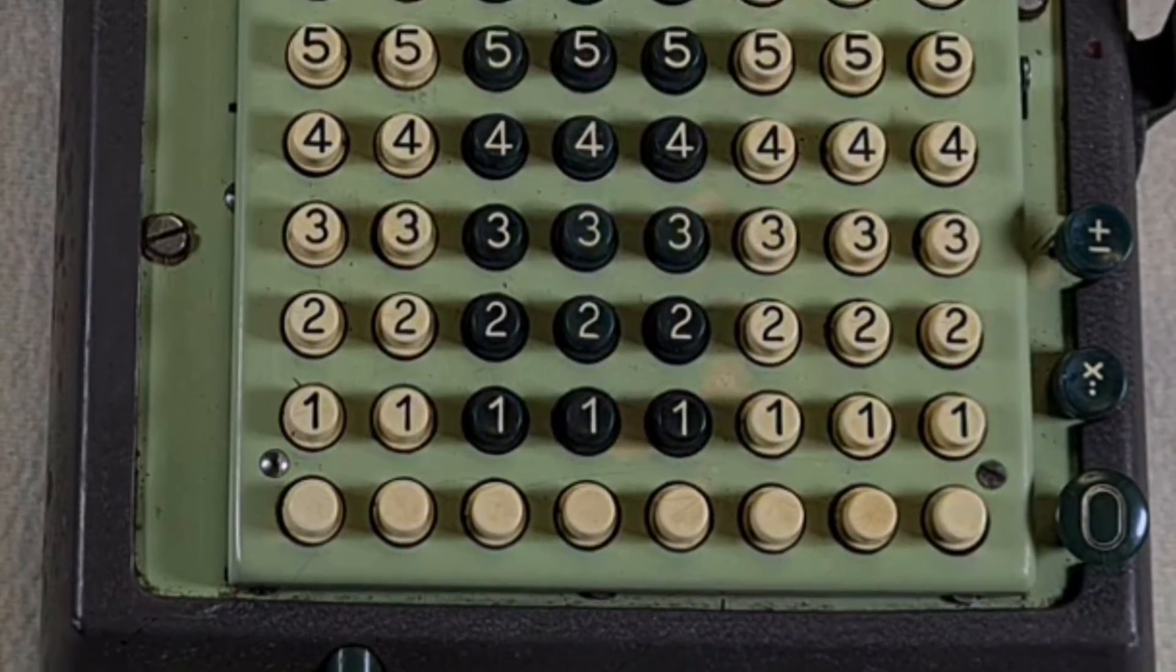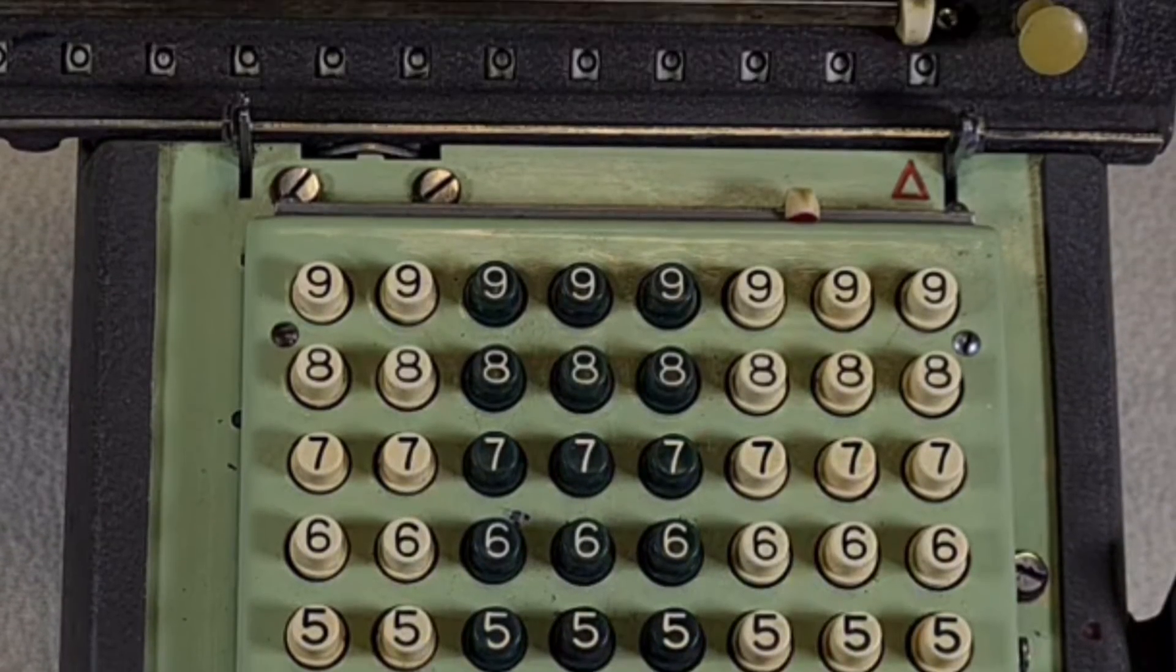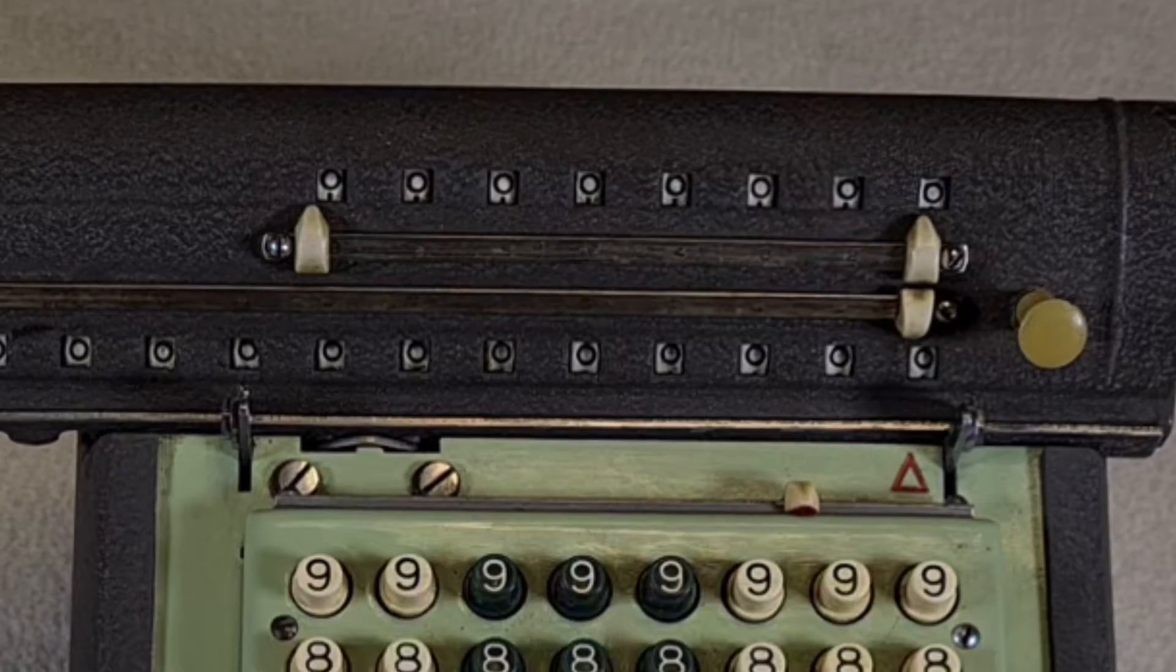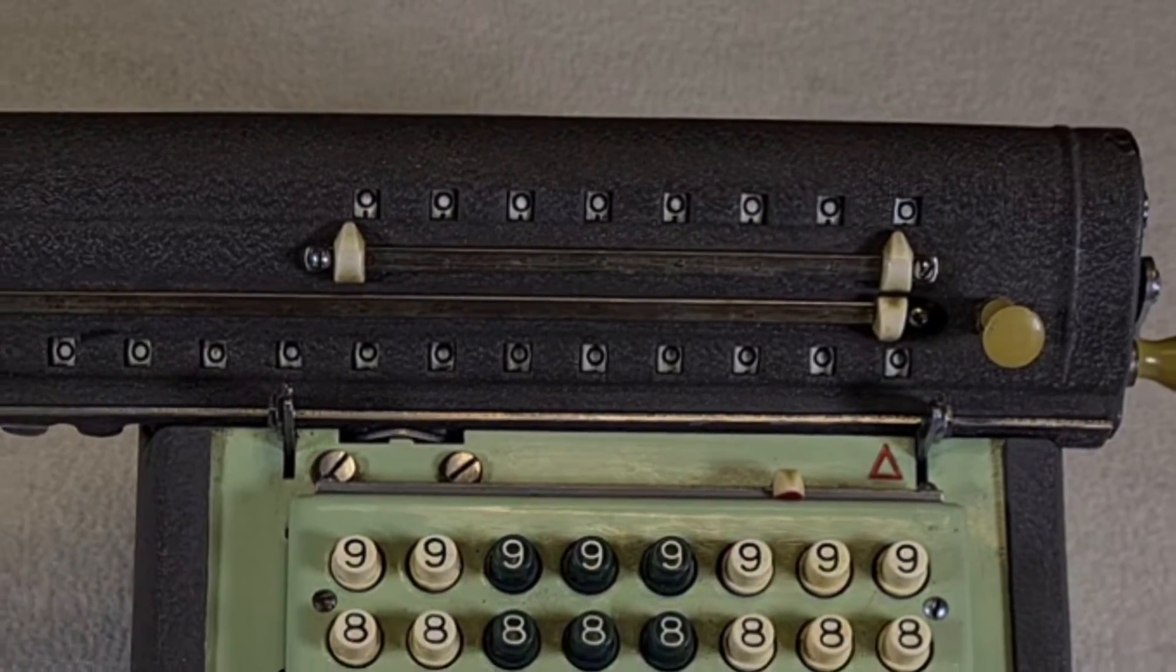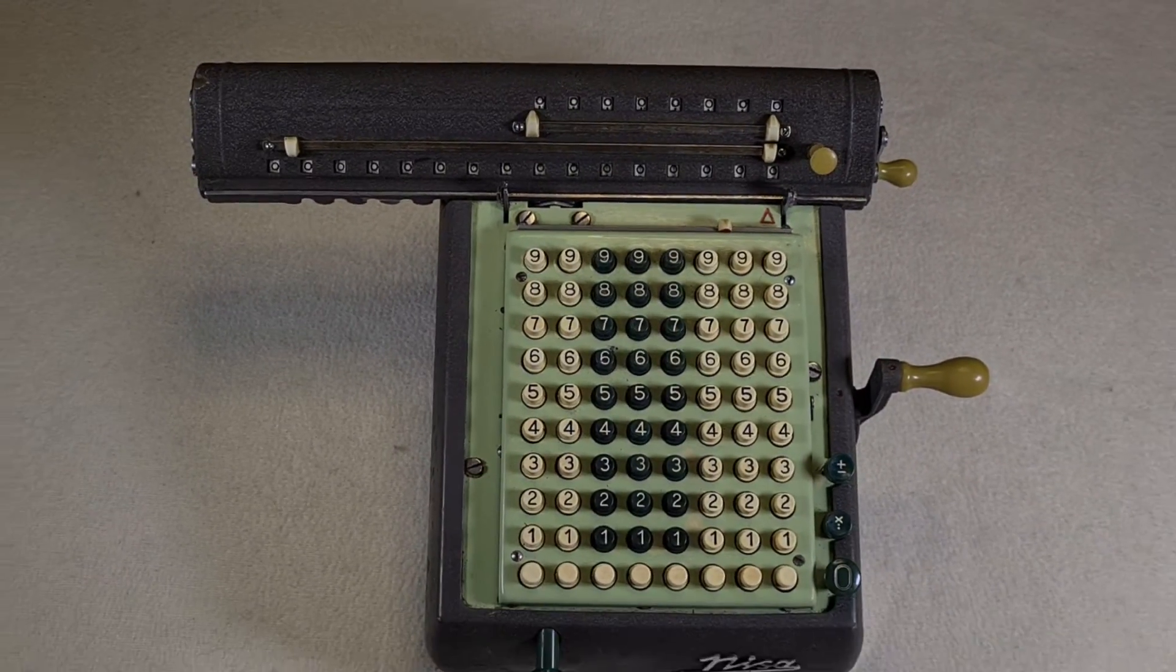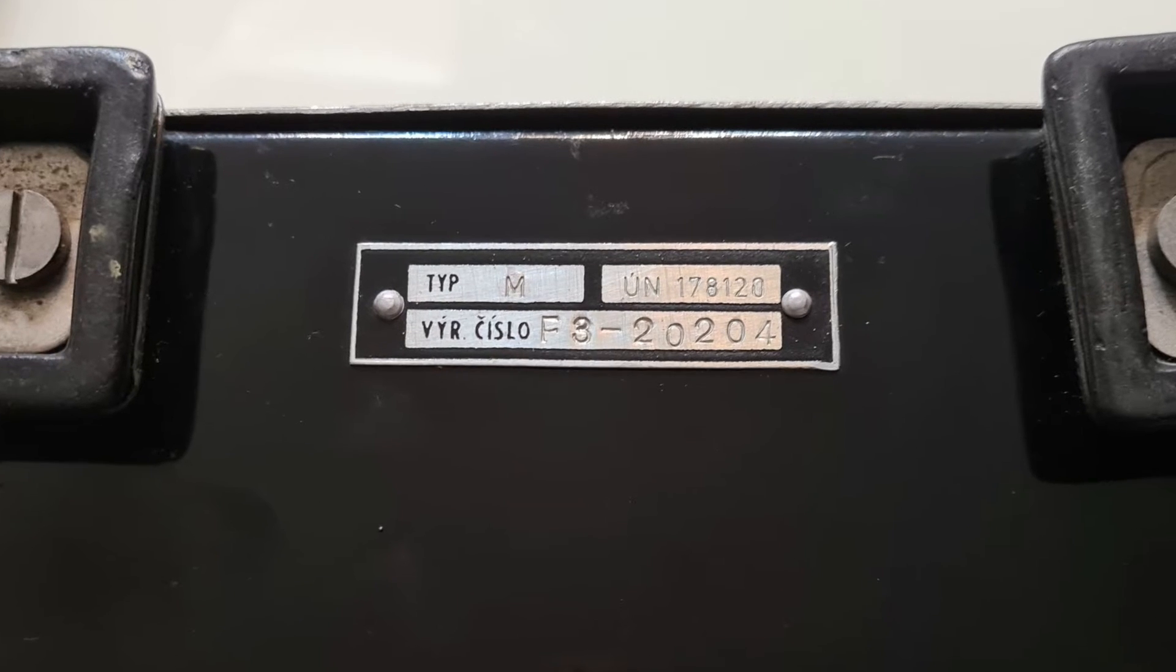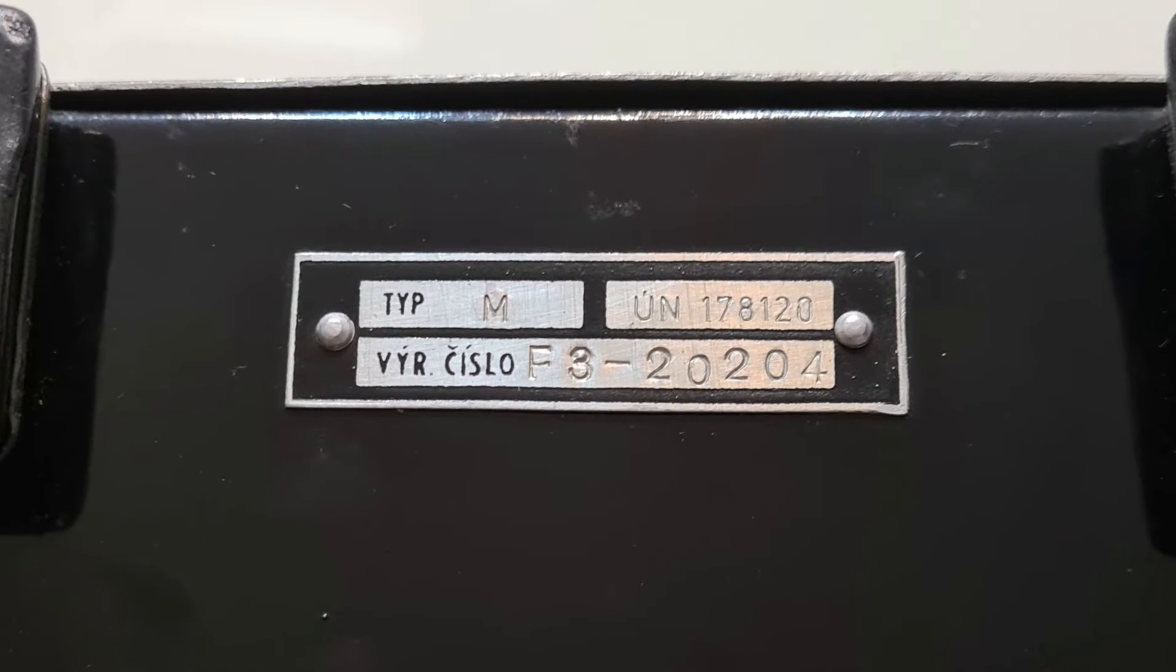It's a mechanical calculator with metal casing. Other NISA models have plastic casing. I didn't find much information about this model. Somewhere I found indication about this calculator as model K, but on my calculator there is a label with model M, so I think it's a model M.